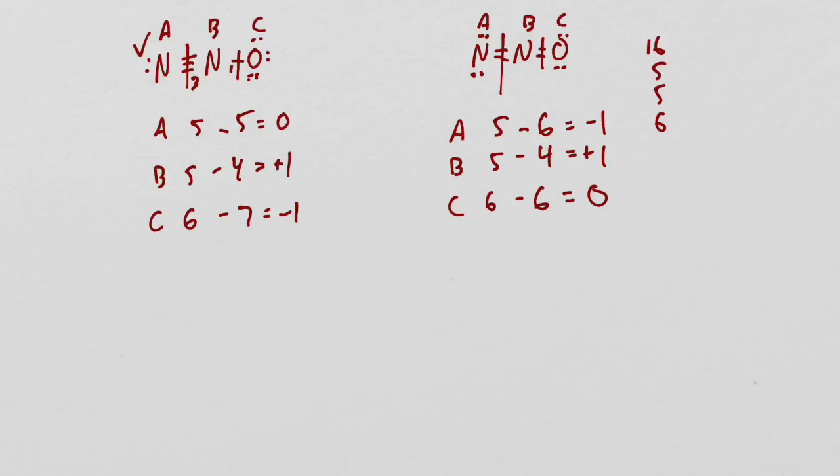By the way, all the formal charges, I failed to mention earlier, if it's a polyatomic ion, have to equal the charge of the polyatomic ion. If it's a neutral molecule, they should add up to 0. So this is good. This adds up to 0, and this one adds up to 0, which means for a molecular structure they're plausible. With that in mind, I'm going to pick this one over here. The reason why I'm going to pick it is because of rule number 2. All things being equal, oxygen is the second highest electronegativity, so it should get the negative formal charge.